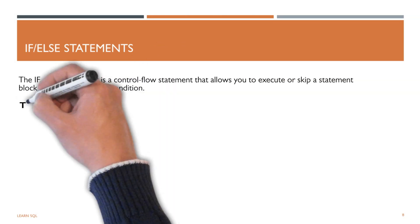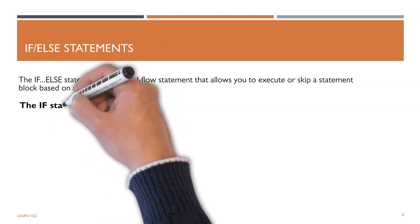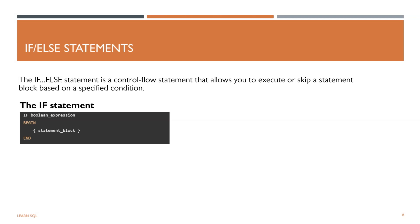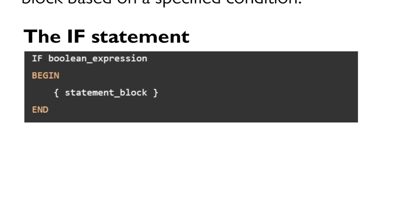The following illustrates the syntax of the if statement. If the boolean expression evaluates to true, then the statement block in the begin and end block is executed. Otherwise, the block statement is skipped and control of the program is passed to the statement after the end keyword. Note that if the boolean expression contains a select statement, you must enclose the select statement in parentheses.